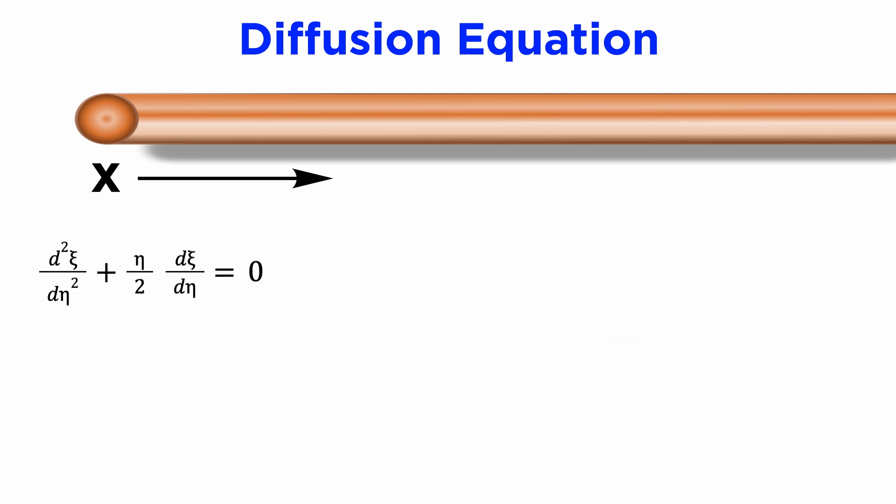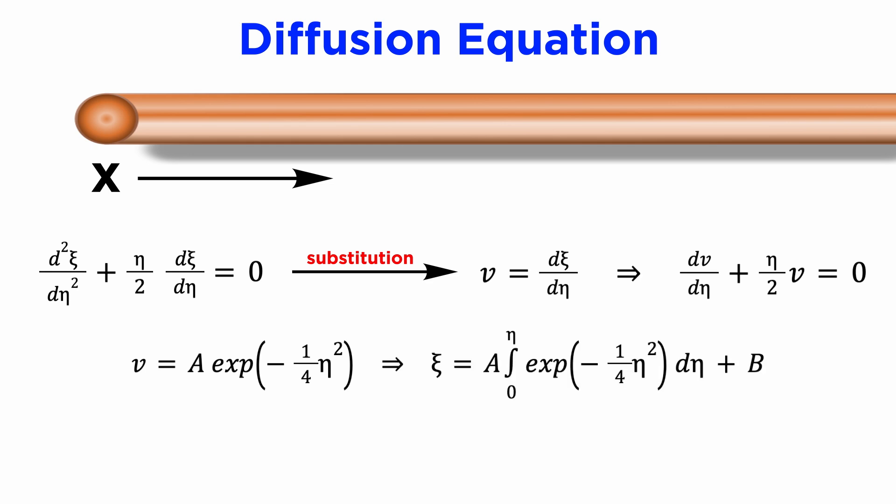Although it has variable coefficients, it can easily be solved by reducing the order using the substitution v equals d xi d eta. We find that v equals e to the negative one quarter of eta squared.